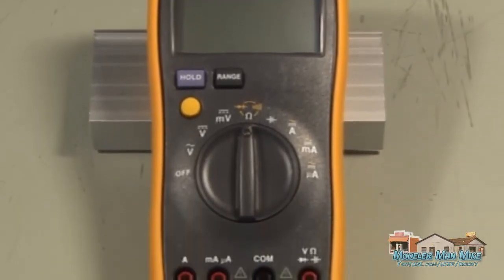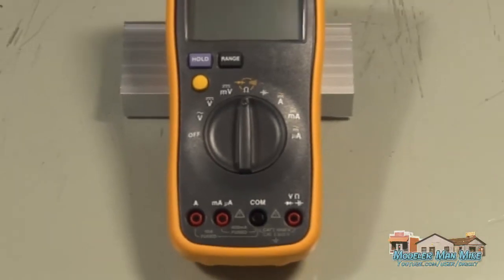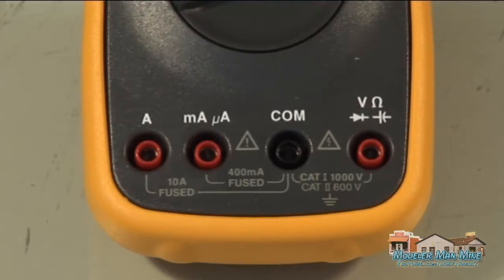This is a Fluke 15B Digital Auto Ranging multimeter. It's a nice little multimeter, best one I've ever owned. It has four ports for your leads.